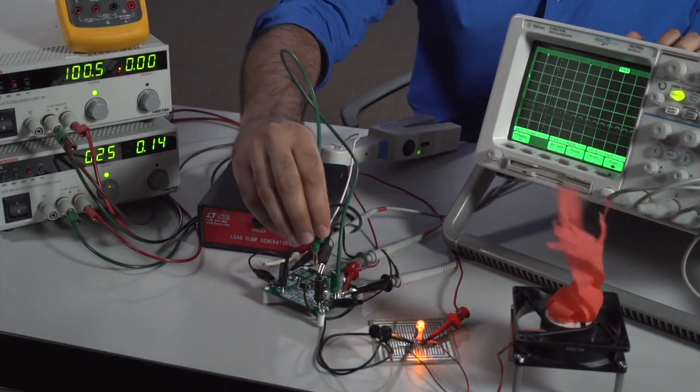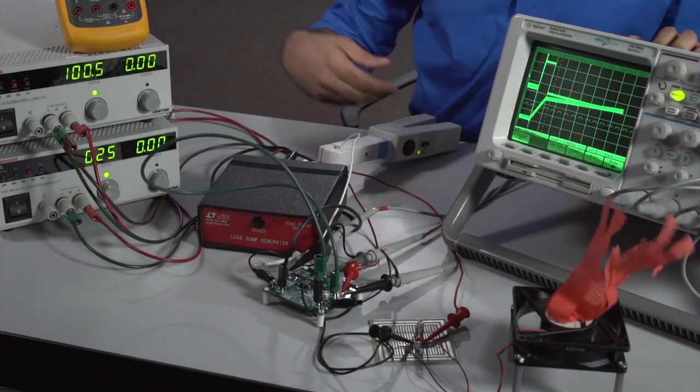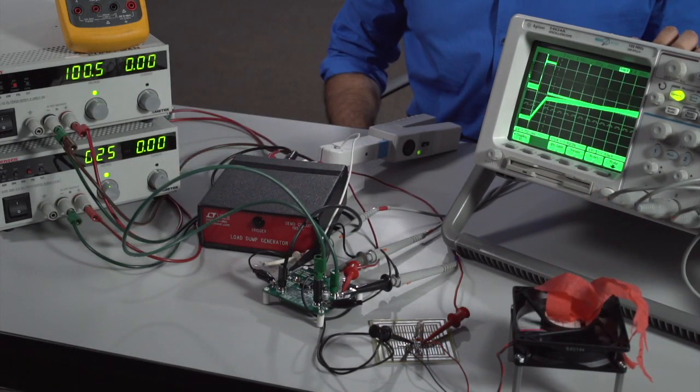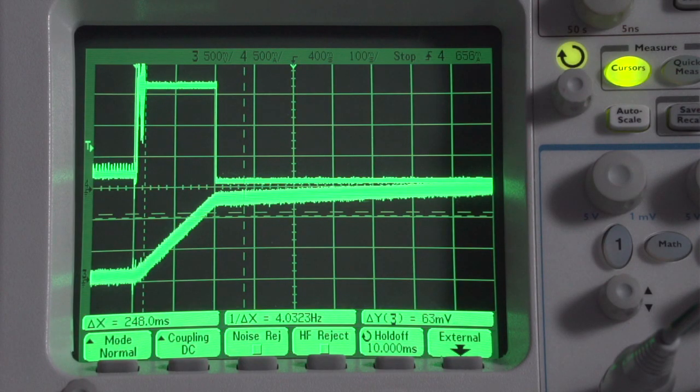In the case of a short circuit event, the LTC4380 will limit the current until the timer runs out and turn off the MOSFET, preserving the fuse. Channel 4 shows the input current being regulated at the predefined current limit till the MOSFET opens. Channel 3 shows the timer reaching its threshold and timing out.